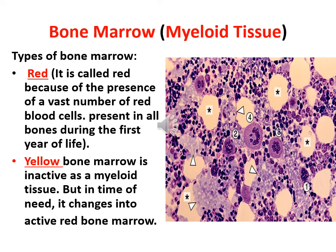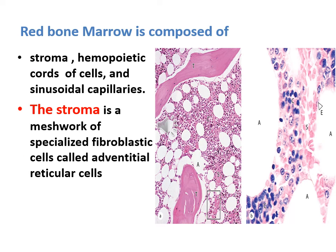The bone marrow, or myeloid tissue. There are two types of bone marrow: red and yellow bone marrow. Red bone marrow is called red because of the presence of a large number of RBCs, and is present in all bones during the first year of life. Yellow bone marrow is inactive as myeloid tissue, but at time of need it changes into active red bone marrow. Red bone marrow is composed of stroma, hematopoietic cords of cells, and sinusoidal capillaries.